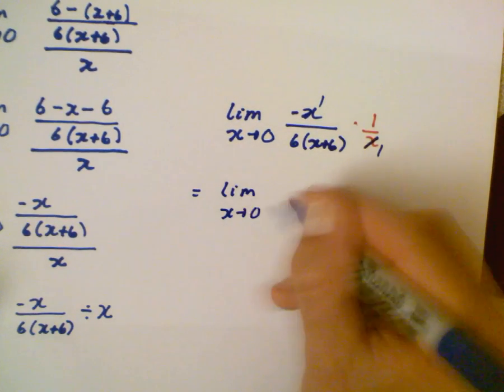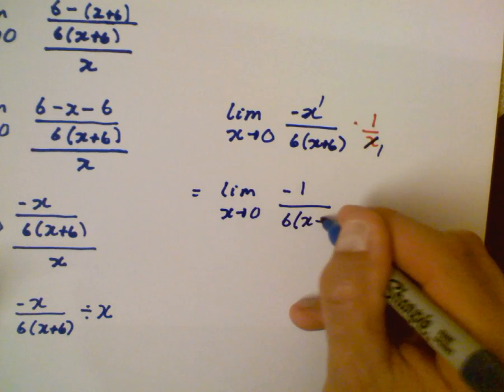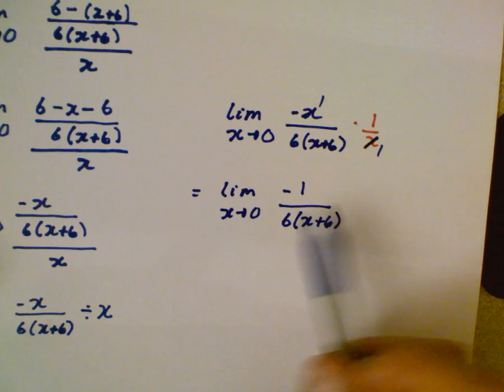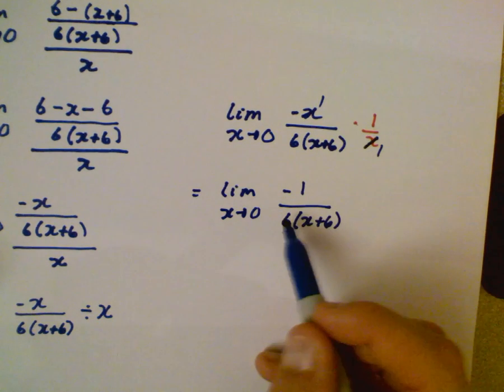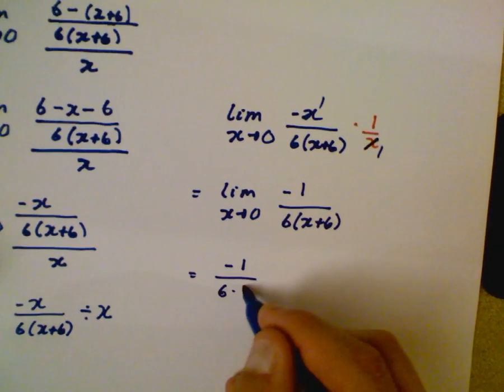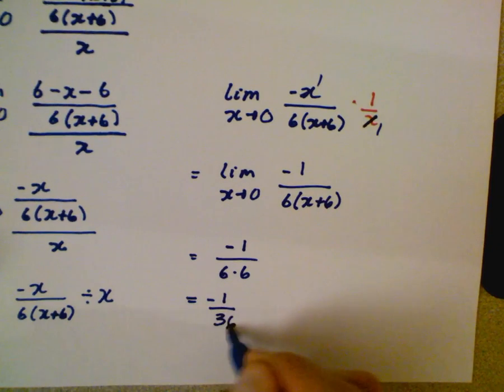You go back to the very first rule of limits algebraically: can I direct substitute? We got rid of our culprit which was x. We plug in zero here, you get negative 1 over 6 times 6. So the limit there is negative 1 over 36.